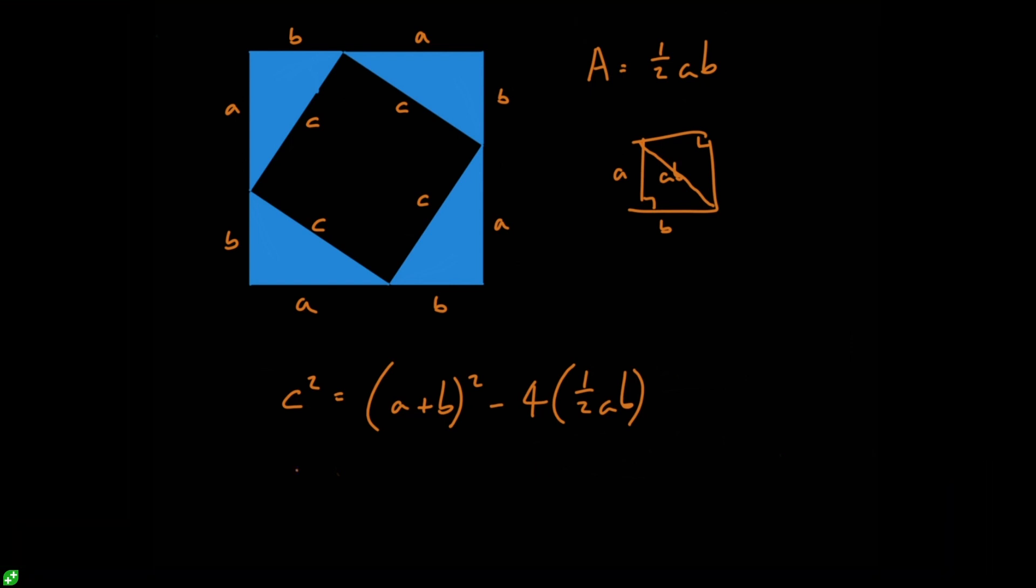Okay, welcome back. Hopefully that wasn't too difficult. So we've got C squared is equal to, we'll expand this out first. So A plus B squared is going to give us A squared plus 2AB plus B squared. And then we're going to subtract four times one half A, B is going to give us 2AB. And well, the 2AB here is going to be cancelled out by the negative 2AB here. And so that leaves us with C squared is equal to A squared plus B squared. And there we have it. We've proved the Pythagorean theorem geometrically using this method.